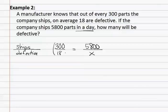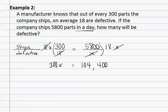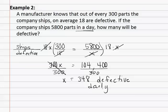Remember that we can clear fractions by multiplying by 18 times x on both sides. This allows us to reduce out the x's and then the 18's to get 300x equals 104,400. We then divide both sides by 300, and this gives us x equals 348 defective daily. And this is our final answer.